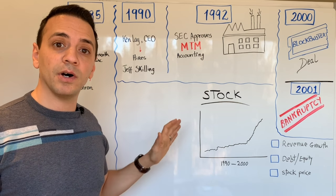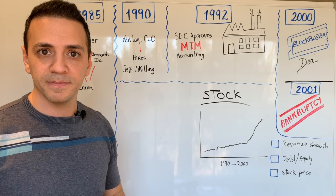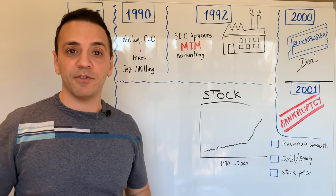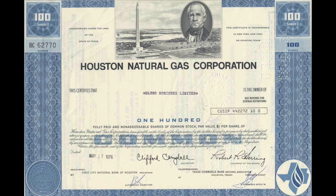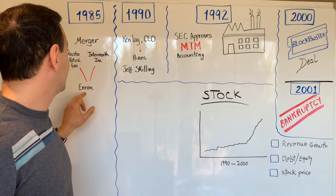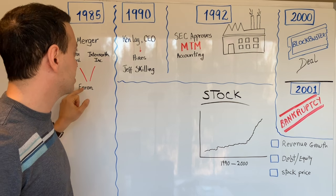The story begins with a merger that happened in 1985 between two companies: the Houston Natural Gas Company and InterNorth Inc. That merger resulted in the formation of the combined entity, Enron. The CEO of Houston Natural Gas at the time was Ken Lay, and he continued to become the CEO of the combined entity, Enron.